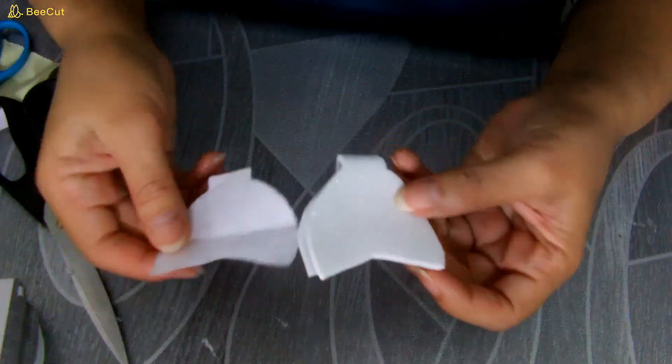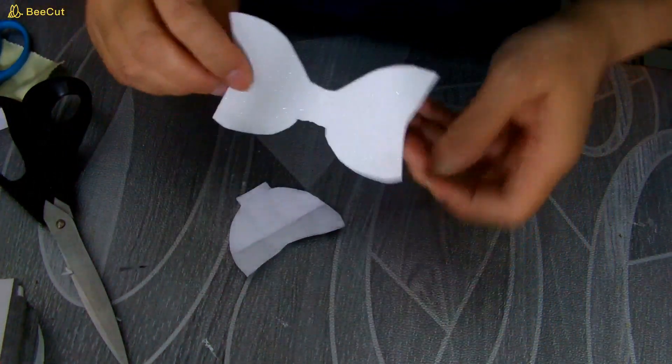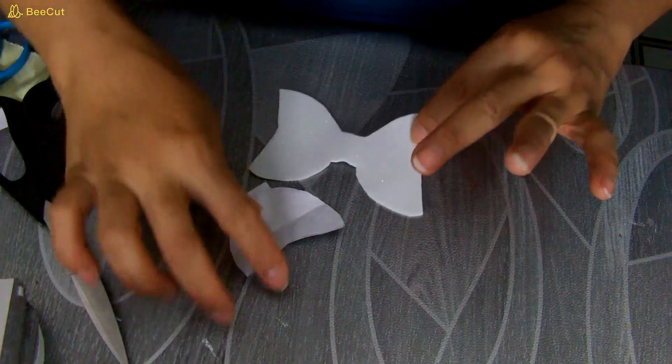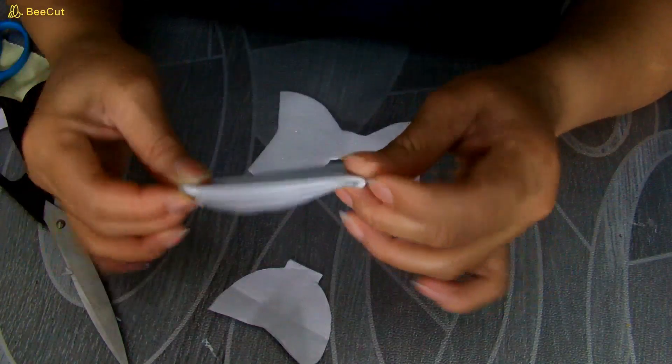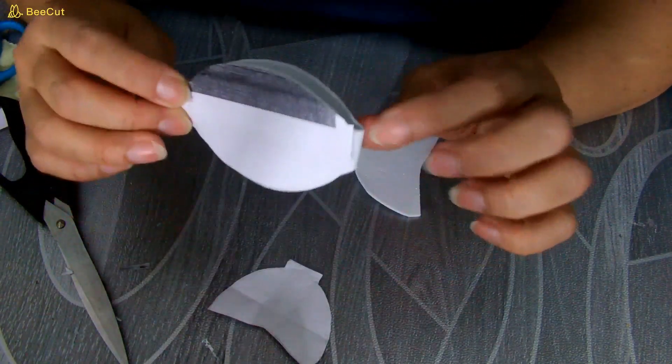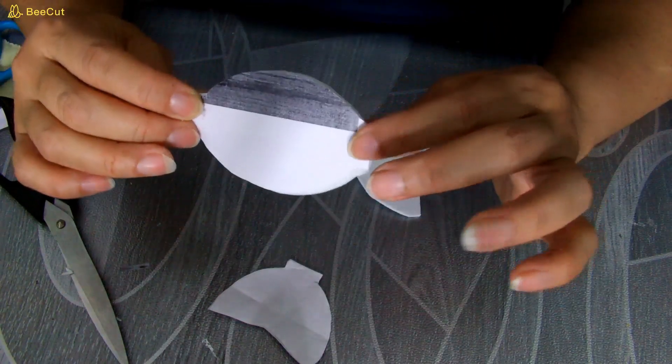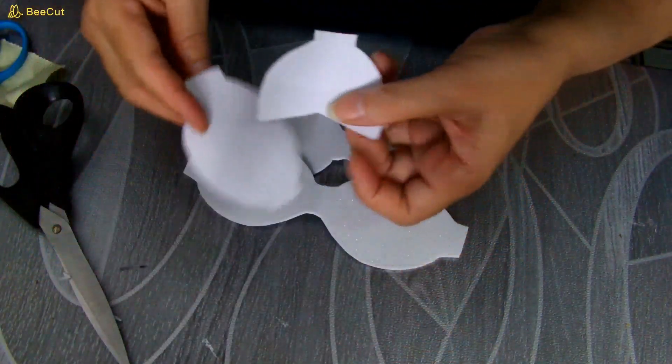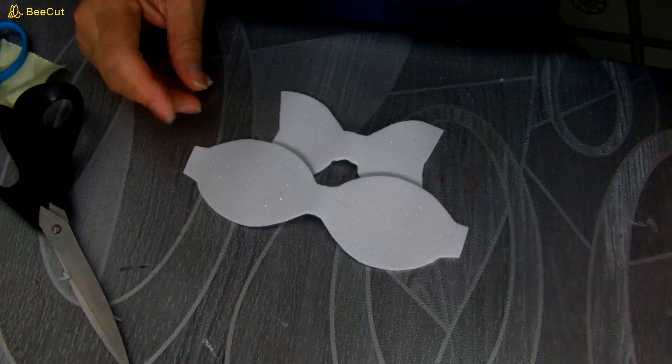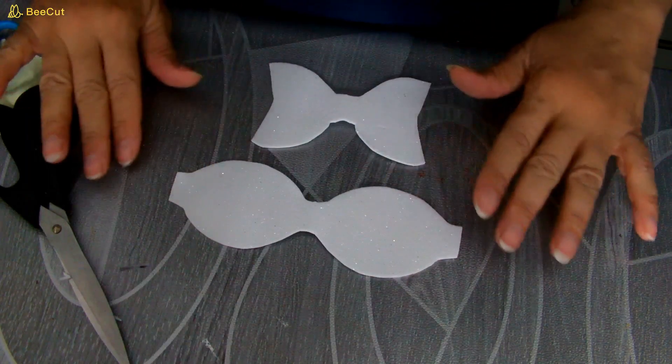Y ya después que lo tengo así, ya lo abro y tengo esta forma de lazo. Lo mismo hice con este, lo recorté también. Doblé el foami y lo puse el papelito que hicimos, el patróncito que hicimos. Doblé el foami y me va a quedar esta forma. Ya aquí tengo el patrón. Ya después que tengo esta forma hecha, esto van a ser nuestros lazos.